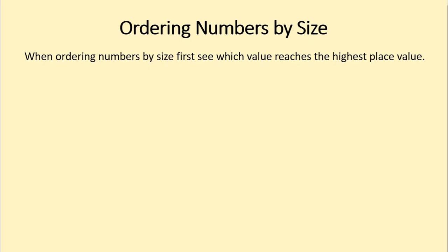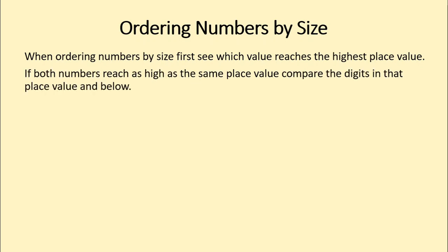Let's move on to ordering values now — putting numbers in order by size. In order to do this, the easiest way is to first look at the highest place value of any number. If both numbers reach as high as the same place value, then we compare the digits in that place value. And if they're the same, we start comparing the ones below as well.